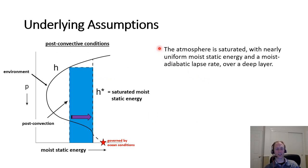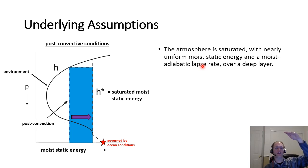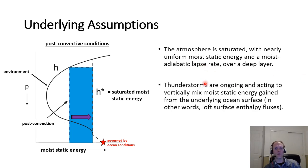Let's look at the underlying assumptions of the WISHI process. We assume the atmosphere is saturated. At the end of stage one we've saturated the atmosphere through convective activity, with a nearly uniform moist static energy along the blue dashed line and a moist adiabatic lapse rate over a deep vertical layer — a nearly uniform equivalent potential temperature from the surface up through the troposphere to the tropopause. We assume a passive role of thunderstorms: they're ongoing, having recovered the boundary layer air, and are vertically mixing moist static energy gained from the underlying ocean upward.